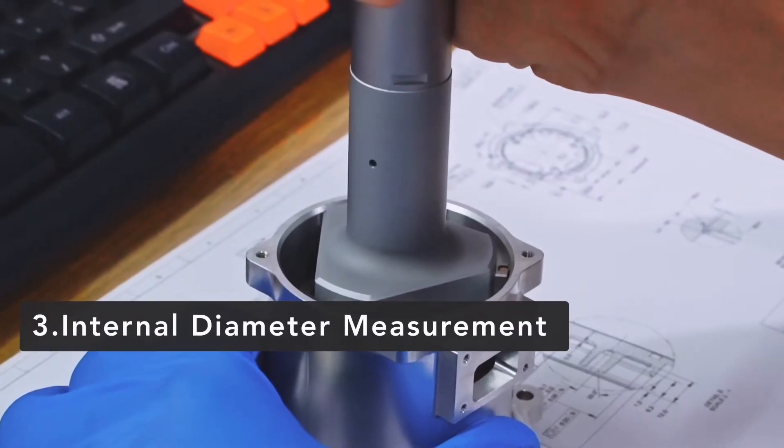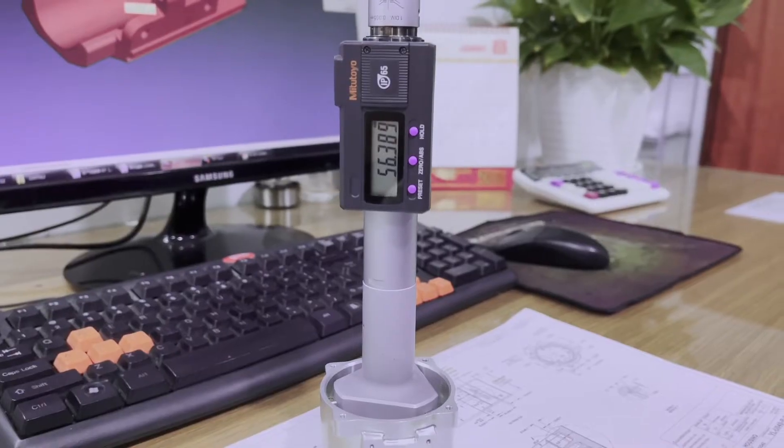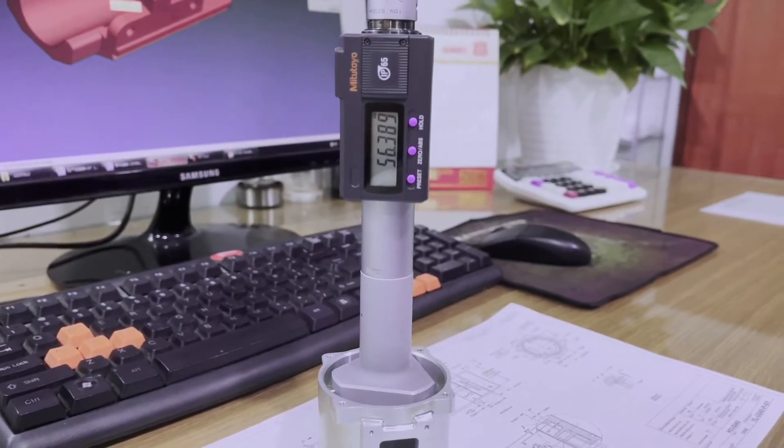The third step now is inner micrometer for checking the diameter of the threads. You can see clearly it is 56.389.